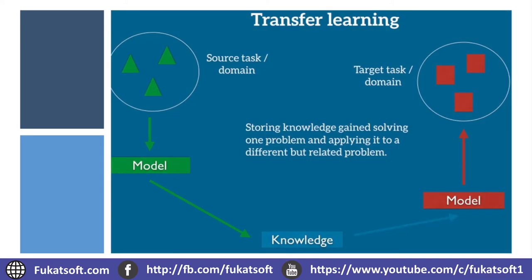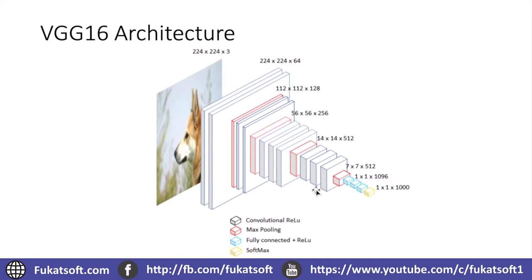In transfer learning, we basically transfer the knowledge of one model. For example, take the VGG16 architecture — we know it is already trained on ImageNet, which consists of around a million images for training and has a thousand categories. Now imagine if we want to apply this VGG16 trained on ImageNet to another dataset — say our own custom dataset with 10 labels.